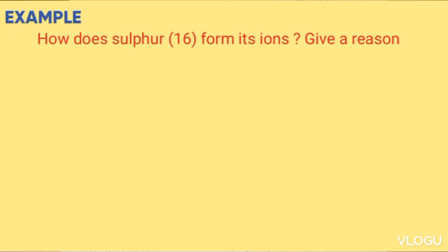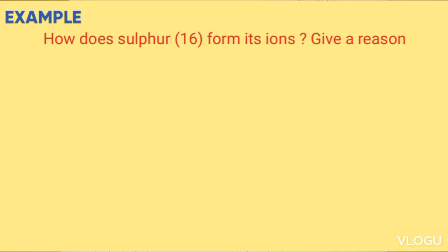Example: how does sulfur of atomic number 16 form ions? First we write electron arrangement which is 2.8.6. There are two ways in which sulfur can attain stability. One, by losing 6 electrons to be 2.8, or gaining 2 electrons to be 2.8.8.